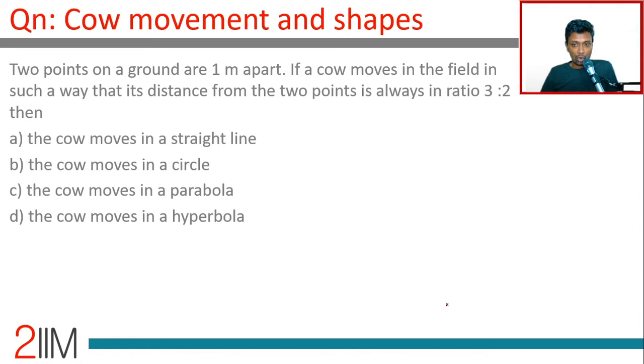Two points on a ground are one meter apart. If a cow moves in the field in such a way that its distance from the two points is always in ratio 3 is to 2, then what's happening? These are locus questions. It is best to think of a coordinate geometry framework.